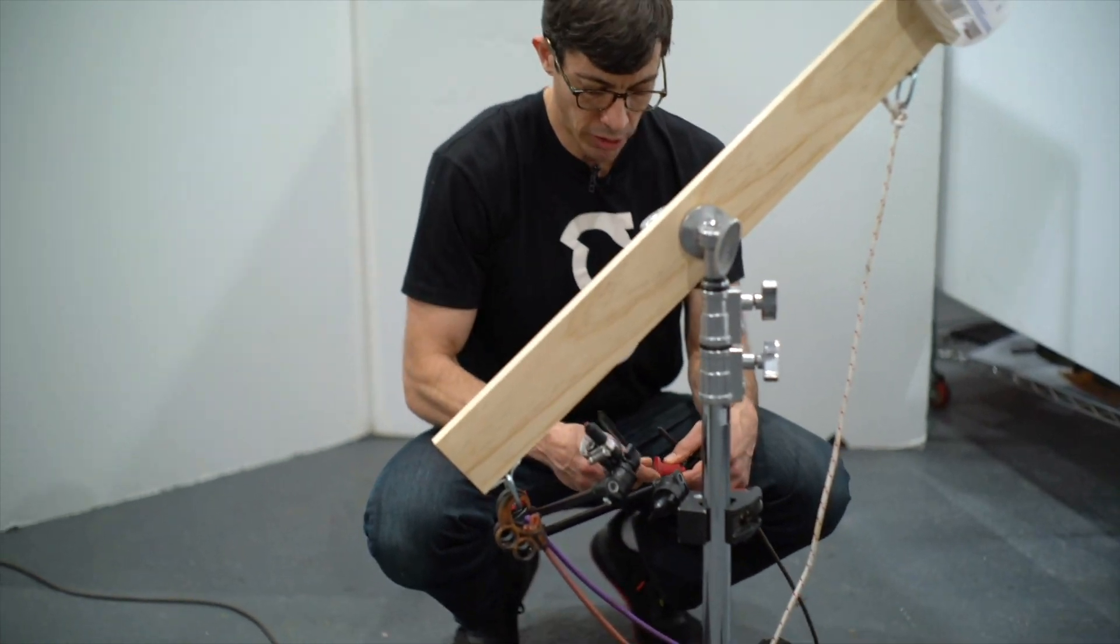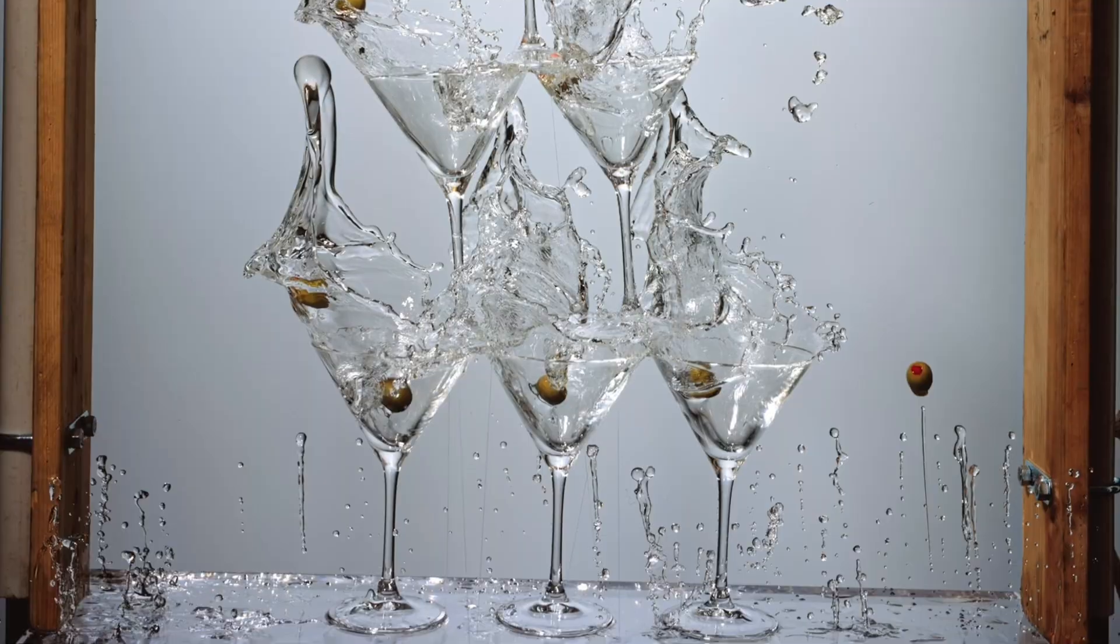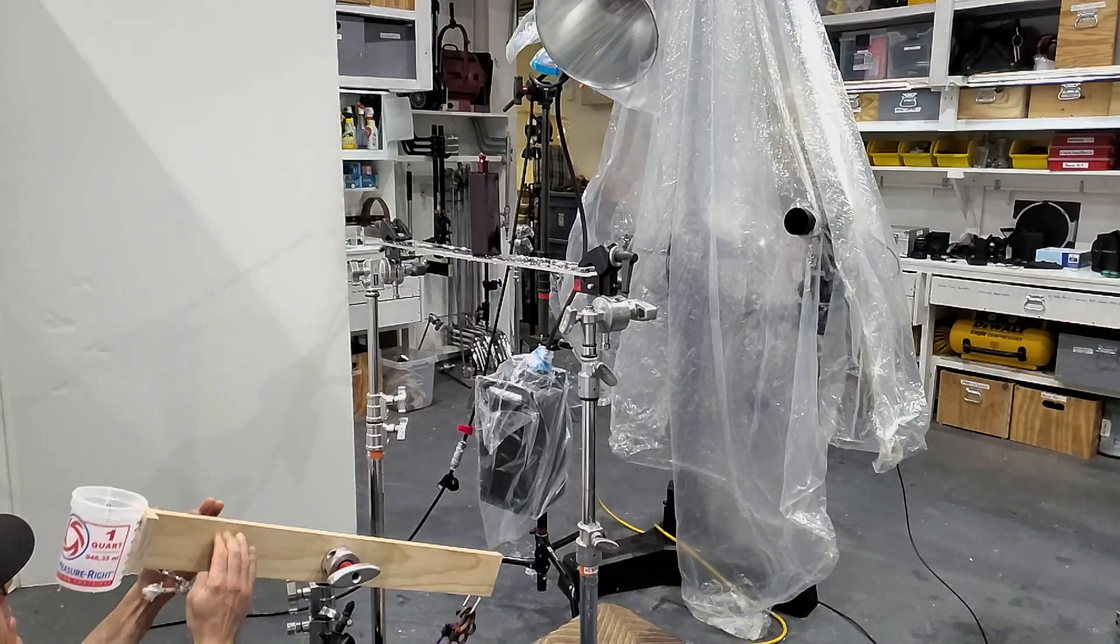This rig and others like it are how I got my start in visual engineering. As a commercial still life photographer, I wanted to create striking imagery of liquids interacting with products, and in the search for these results, I learned a lot about simple mechanical rigs. For example, the bungee cord catapult we have here.